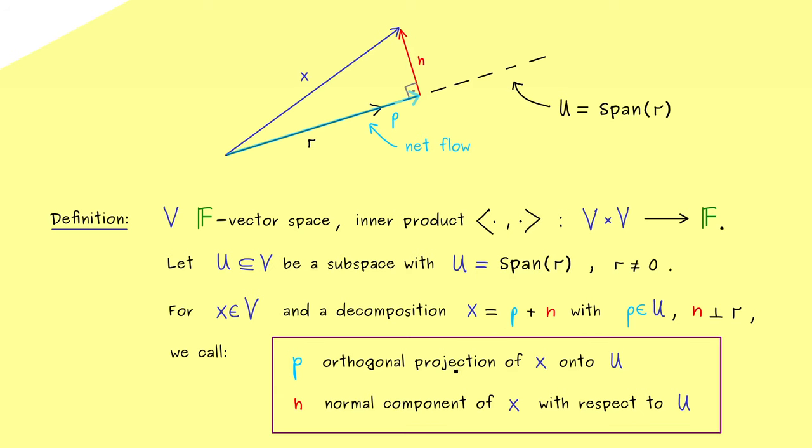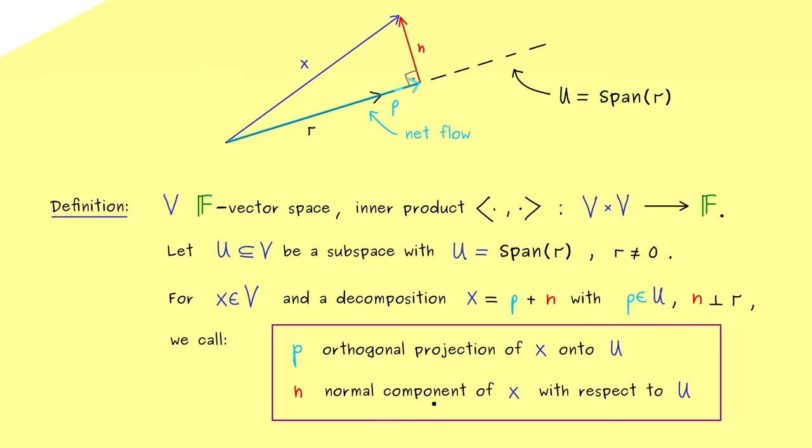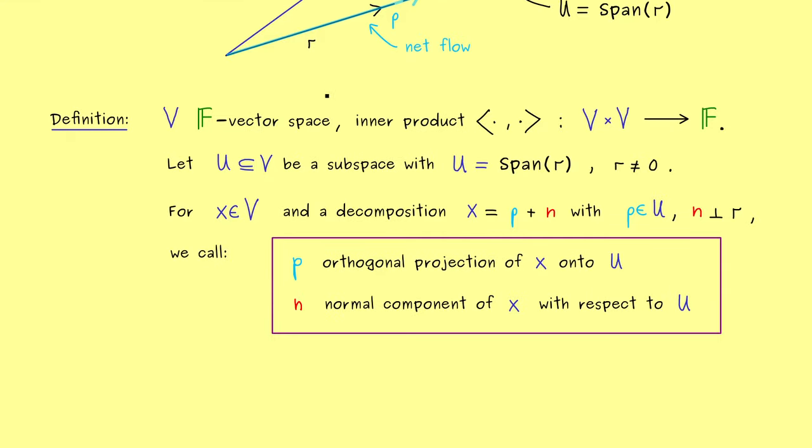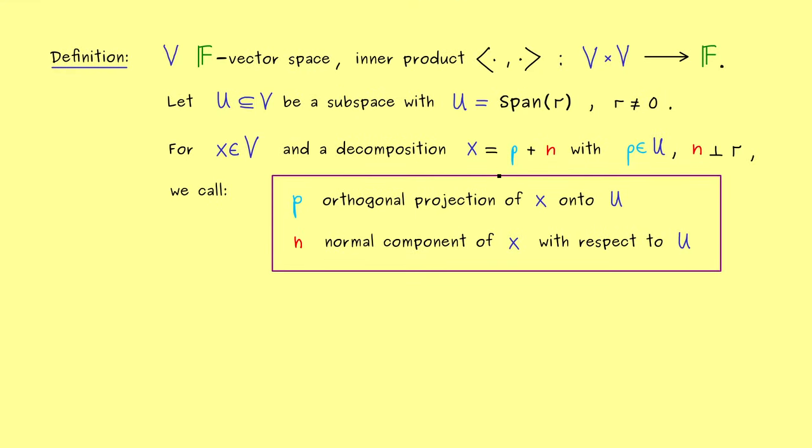Ok so I mentioned it before and as you can see these names only make sense if we have a uniqueness in this decomposition. Otherwise it would be strange to speak of the orthogonal projection if we had more than one. Therefore the first thing we should do now is to prove the uniqueness. Indeed the picture should already tell us that we cannot change the vectors here without changing one of the properties, but now let's prove it mathematically.